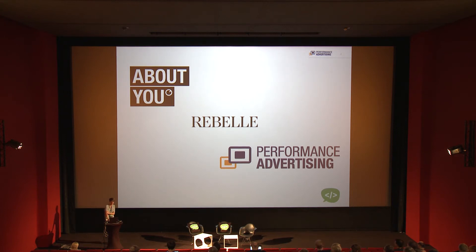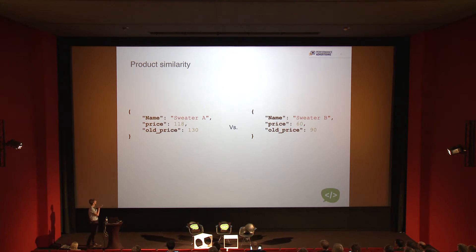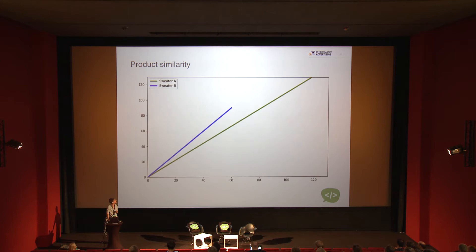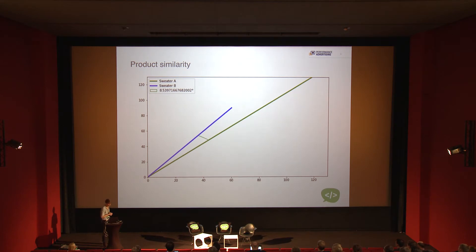Let's look at products. We have a very basic example: sweater A and sweater B. They have prices — one is 118, one is 60 euros — and an old price before reduction. If you want to say how similar these two items are, you make a graph out of it. Product A, product B. The formula for saying how similar these items are, based on the vectors representing them, is the angle between the two of them. This is called cosine similarity.